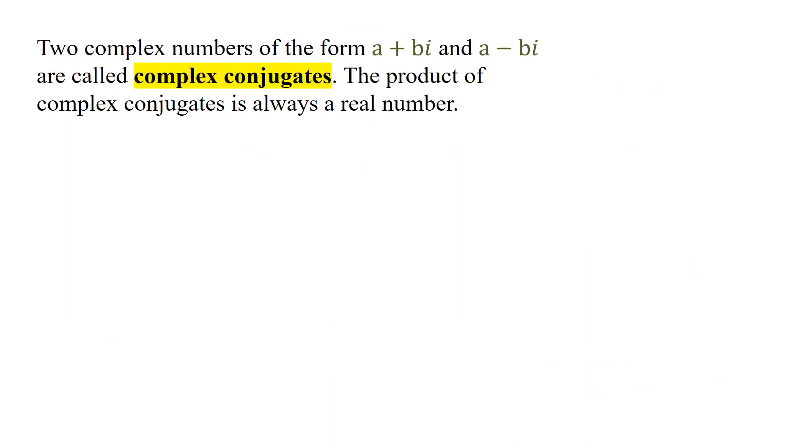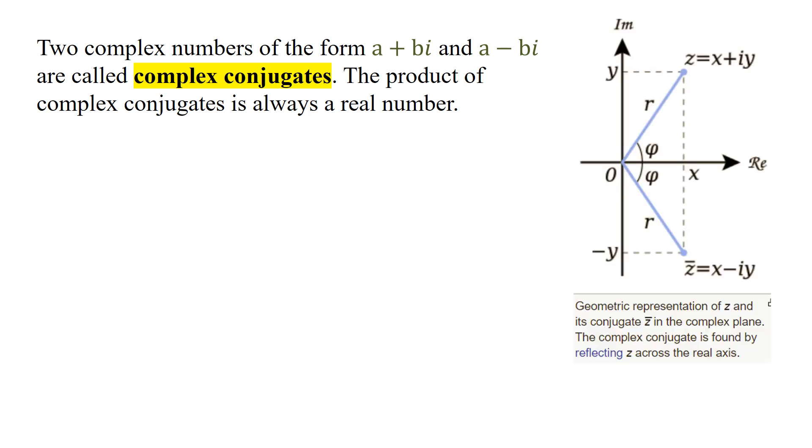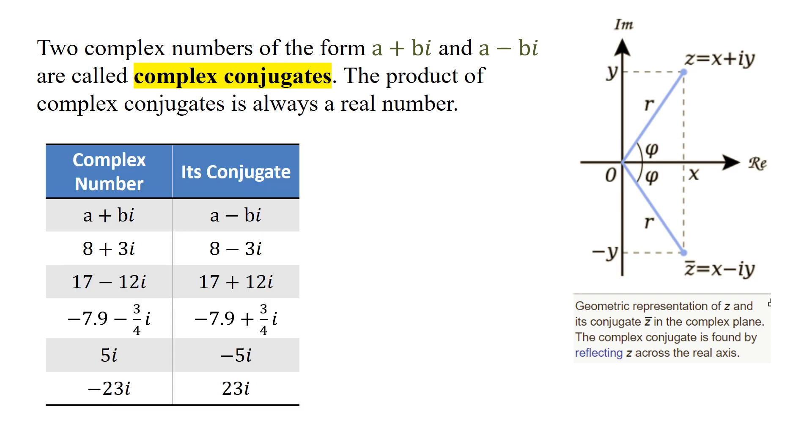Two complex numbers of the form a plus bi and a minus bi are called complex conjugates. When we get to graphing this will make a little more sense. If one of the complex conjugates is a plus bi, which would put the point right here, a minus bi would be down here. There's a list of complex conjugates. Let's look at one specific case, maybe this one, and we're going to multiply two complex conjugates together.